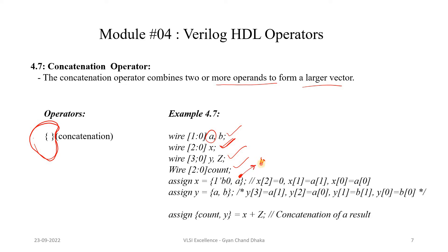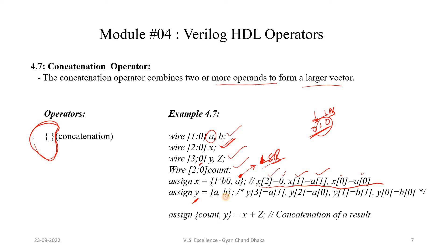Since A is a 2-bit variable, the 0th bit is the LSB. X is a 3-bit value so the third bit in X will be 0. The assignment results in: X[0] = A[0], X[1] = A[1], and X[2] = 0. In another example, assign Y = {A, B} where Y is 4-bit and A and B are 2-bit. LSB of Y is the LSB of B: Y[0]=B[0], Y[1]=B[1], Y[2]=A[0], Y[3]=A[1].